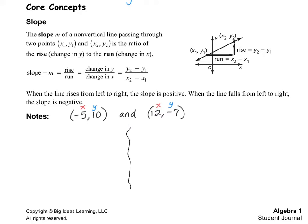We're going to solve this in two different ways. I always like to put what I call the skeleton of the formula down — it's a fraction with subtraction signs on the top and the bottom. On the top we put our y numbers, so 10 and negative 7. On the bottom we need to put our x numbers. Since I started with 10 on top, I have to start with negative 5 on the denominator.